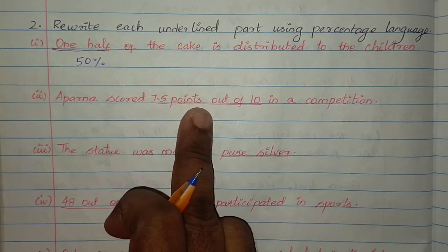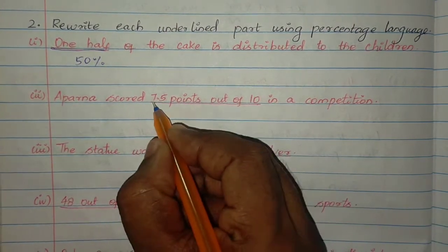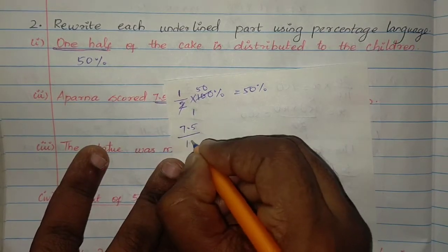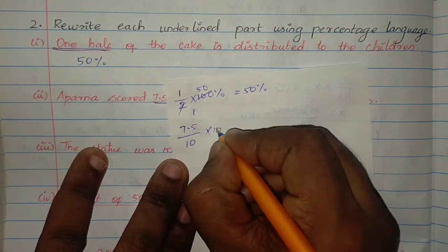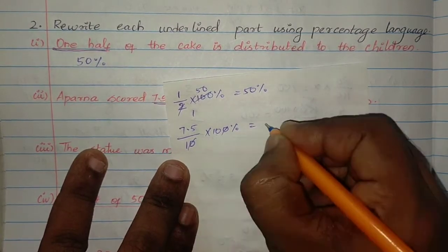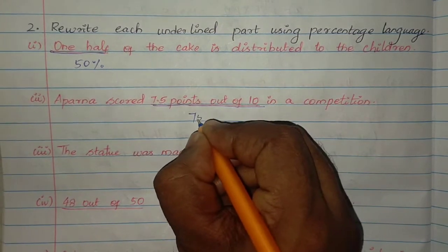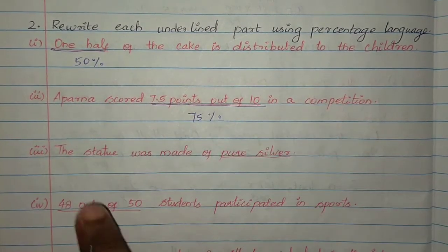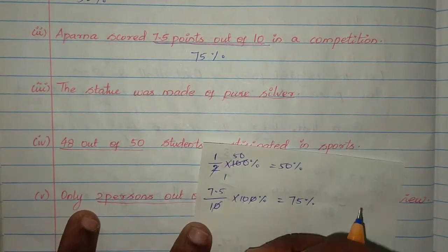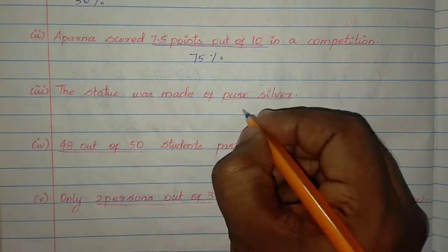You scored 7.5 points out of 10 in the competition. So 7.5 by 10 into 100% equals 75%. The statue was made of pure silver — pure silver is 100%, so the answer is 100%.